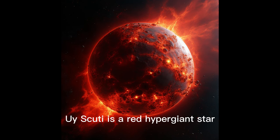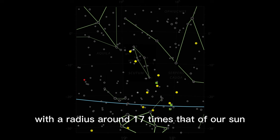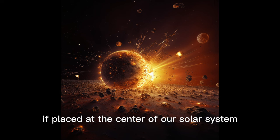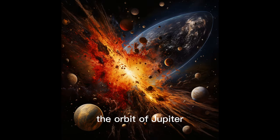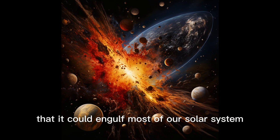UY Scuti is a red hypergiant star located in the constellation Scutum, with a radius around 1,700 times that of our sun. If placed at the center of our solar system, its outer surface would extend beyond the orbit of Jupiter. Imagine a star so vast that it could engulf most of our solar system.